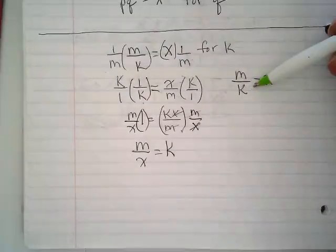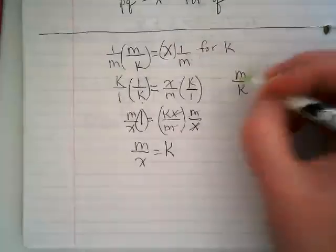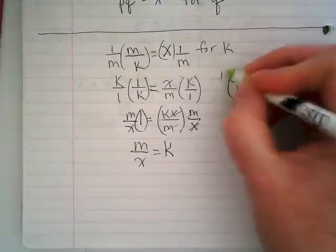It needs to be a numerator because it can be over an invisible one. It can't be under an invisible one. Why don't we start with multiplying with k over 1?